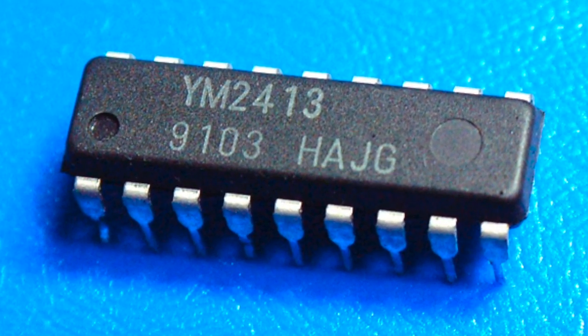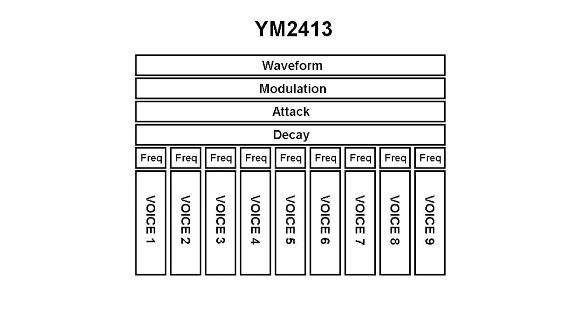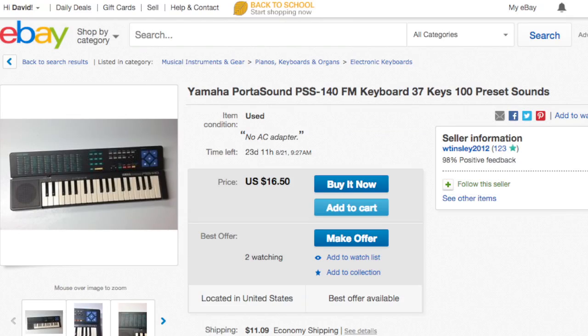I also want to briefly mention the Yamaha YM2413 chip — it's basically the same chip as the YM3812, but cost-reduced. Unlike the YM3812 where all 9 voices can be independently programmed, the YM2413 allows you to program only one sound and all 9 voices must play the same sound. Several very low-cost keyboards made in the early 1990s use this chip, and some can be obtained on eBay for as little as $10. They may not have the exact same chip as the Sound Blaster, but they still have the same characteristic sound.